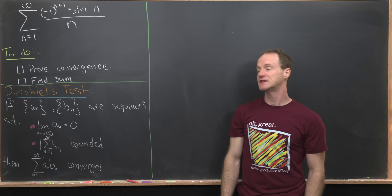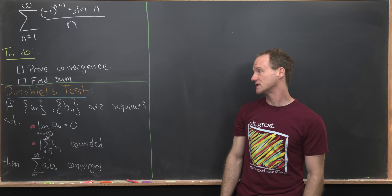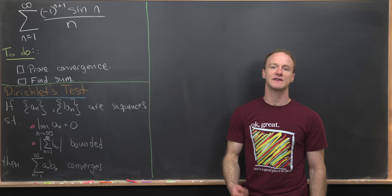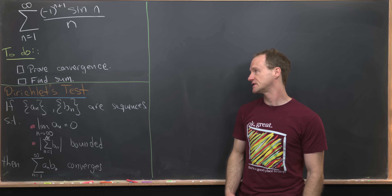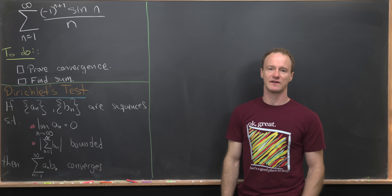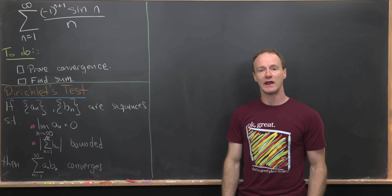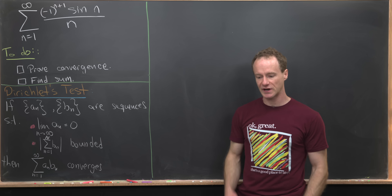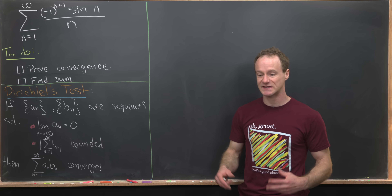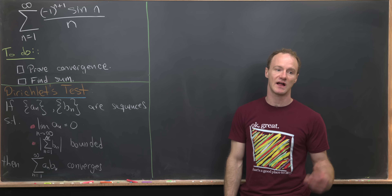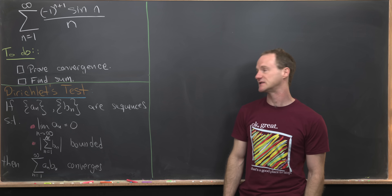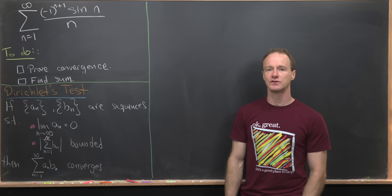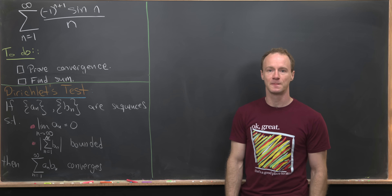We're going to do this in a two-step process. We're going to first carefully prove that this series converges, and then we're going to find the sum. In order to prove convergence, we're going to use something sometimes called the generalized alternating series test, but it's also known as Dirichlet's test.